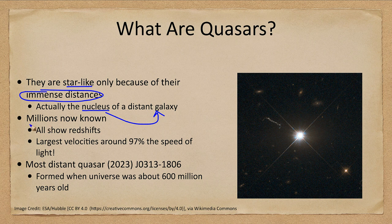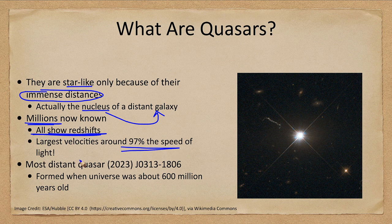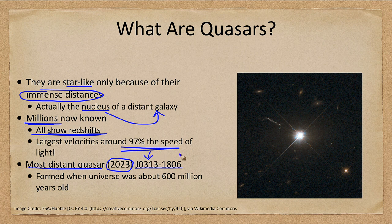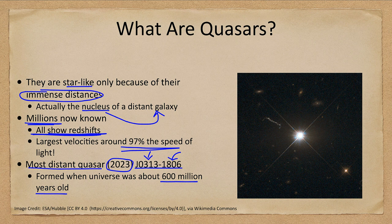Millions of quasars are known, and every single one of them shows a redshift — everyone is moving away from Earth with velocities up to 97 percent the speed of light. In fact, the most distant quasar as of 2023 was one known as J0313-1806. These coordinates represent the right ascension and declination of the quasar. This one was formed when the universe was about 600 million years old, making it a very ancient object looking back to the very early times in the universe.